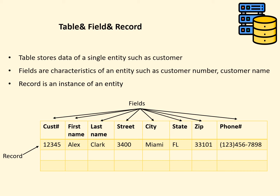State, zip code, and phone number. A record is an instance of an entity — for example, a row including all attributes of a customer is called a record in the customer table. If there are 100 customers in the table, there will be 100 records. In short, attributes or fields refer to the columns in tables, and records refer to the rows of the table.